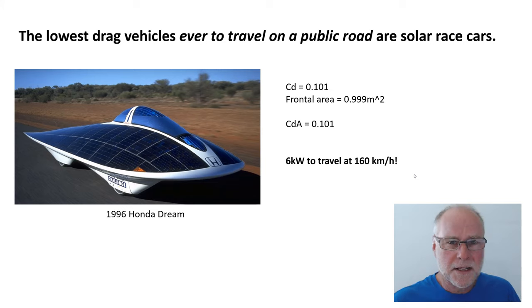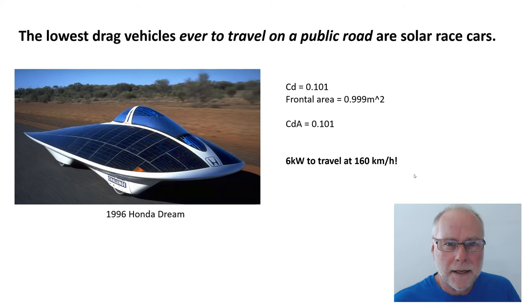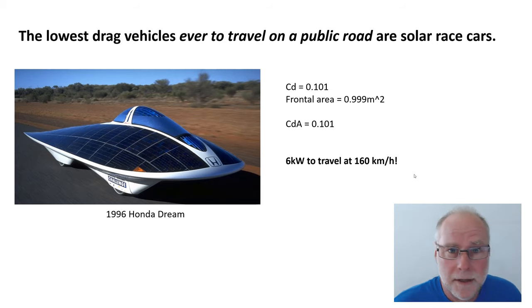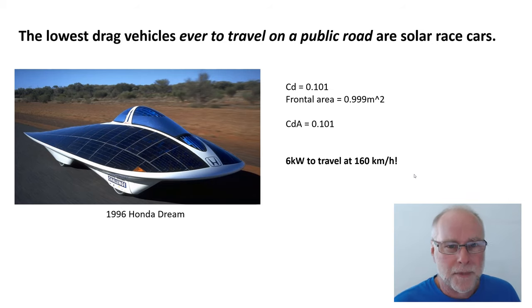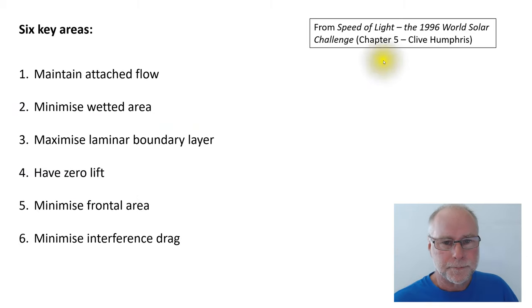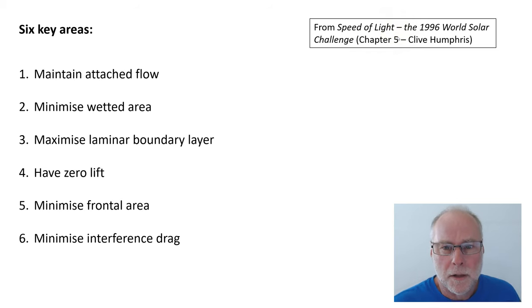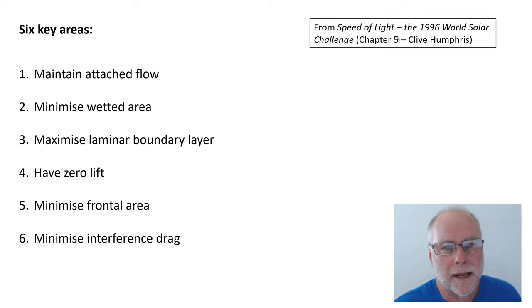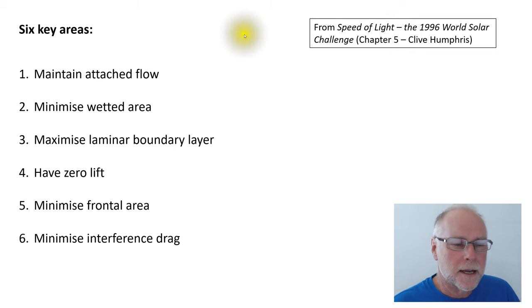So if we want to see how we can create the lowest drag vehicles, we really need to start by looking at what the lowest drag vehicles that have ever existed have actually done. I want to take a look at six key areas. These are drawn from Speed of Light, the book on the 1996 World Solar Challenge, and specifically Chapter 5 by aerodynamicist Clive Humphress.